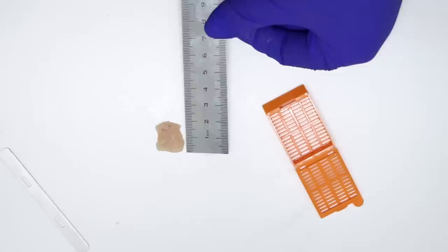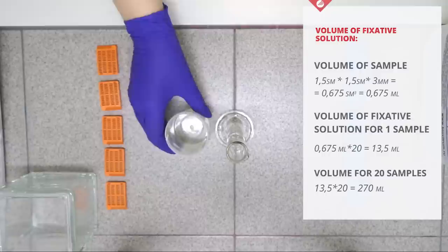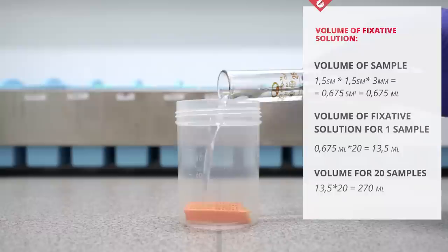The volume ratio of the material and fixative solution should be 1 to 20. For example, if your sample has a volume of 675 µL, then you need to add 13.5 ml of fixative solution. If you have 20 samples, then you need to use 270 ml of formalin. You can always count the amount of formalin that you need for your work.